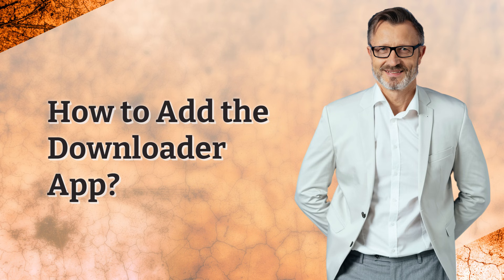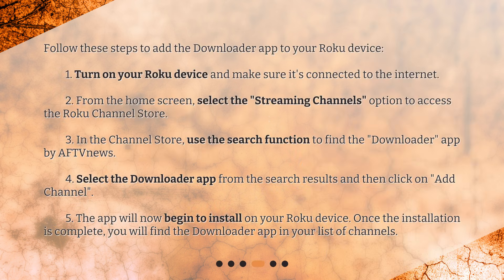How to add the Downloader app? Follow these steps to add the Downloader app to your Roku device. Step 1: Turn on your Roku device and make sure it's connected to the internet. Step 2: From the home screen, select the Streaming Channels option to access the Roku channel store.